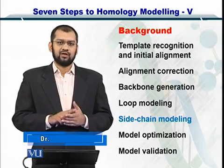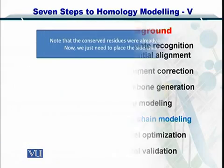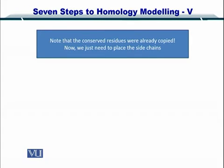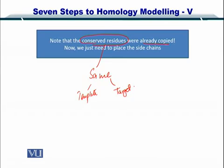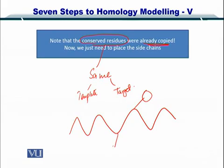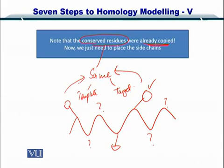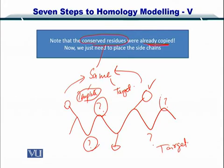Everything else is done. The conserved residues — that is, the residues that were the same between the template and the target — have already been copied. So you now have a structure with a backbone with some side chains added while some side chains are missing. The ones already added are because they had the same amino acid as the template. This is your target structure at the moment, and now we are going to look at how we can insert the remaining side chains.